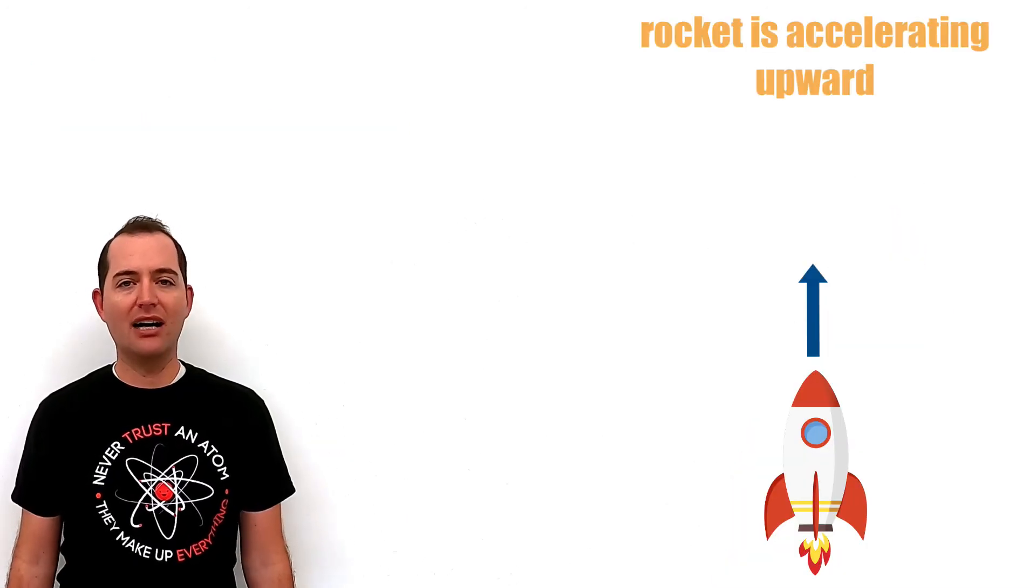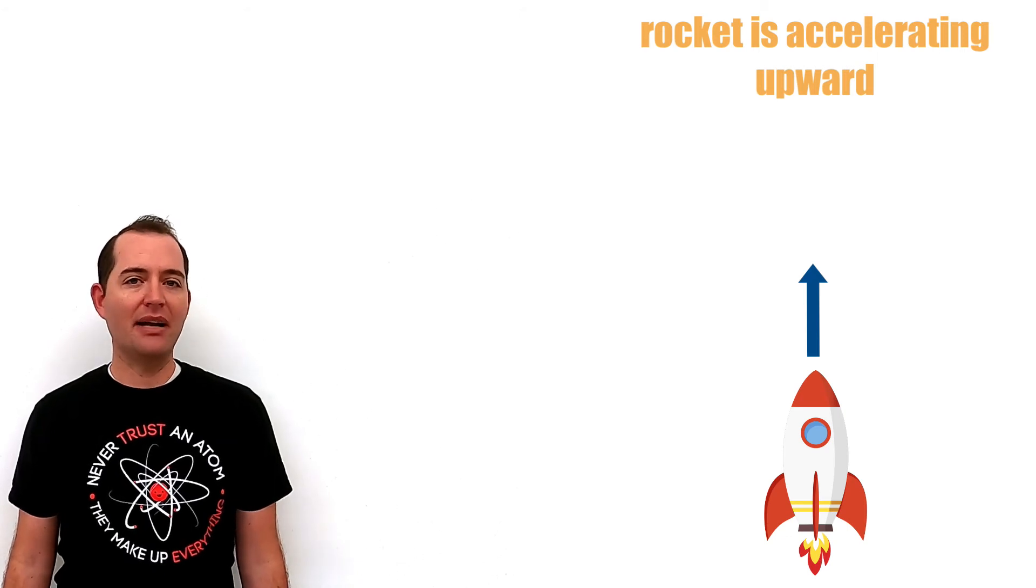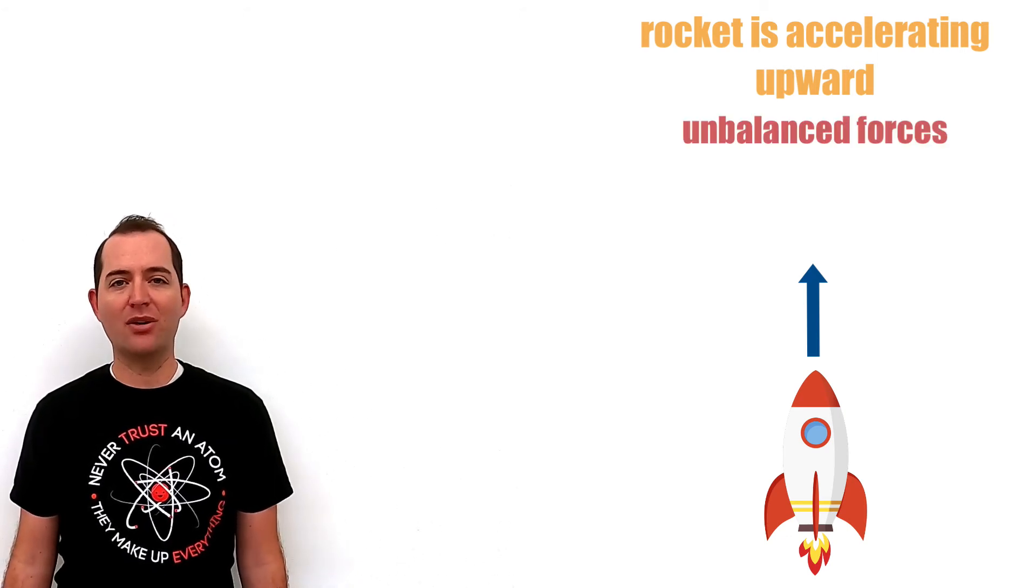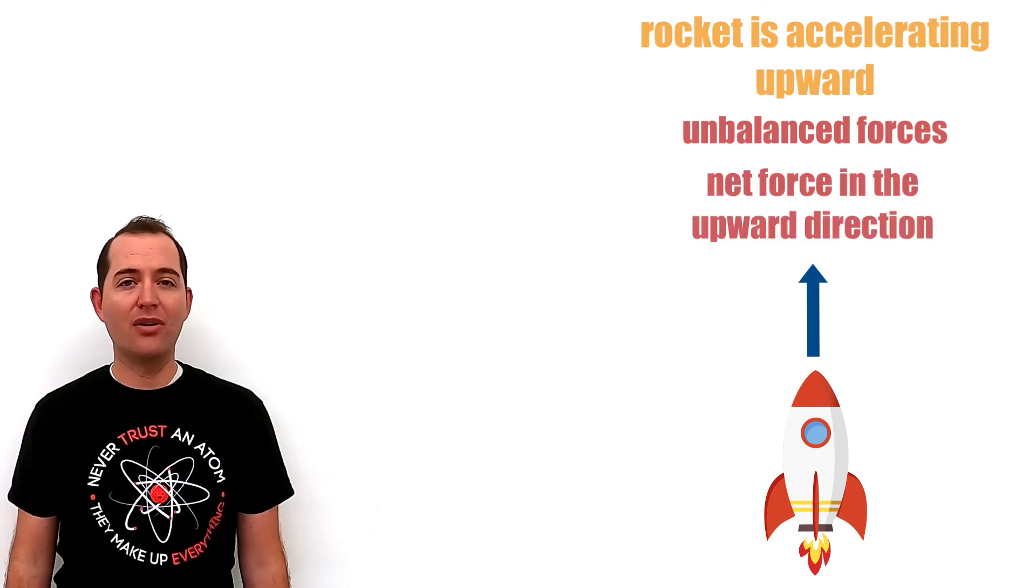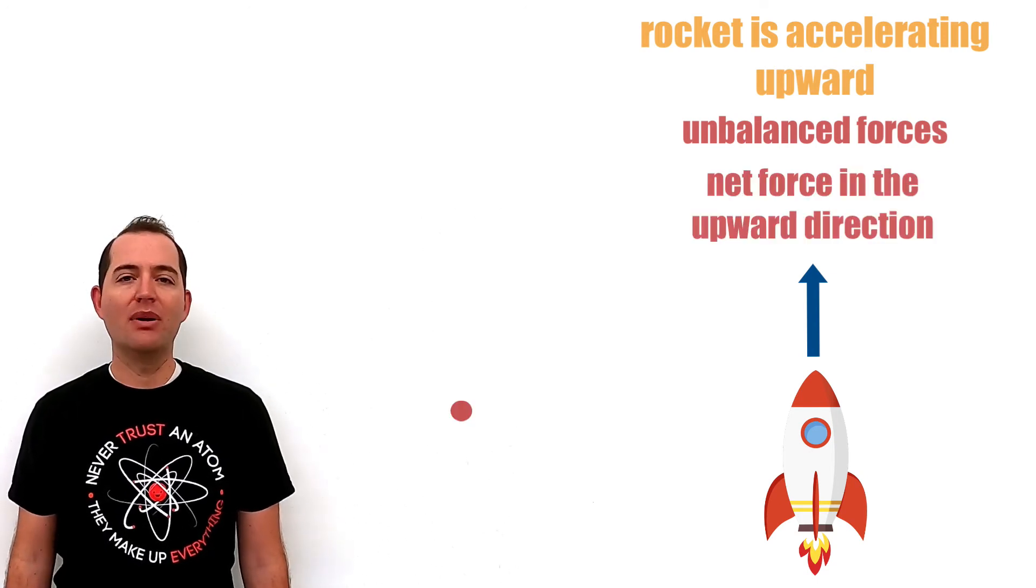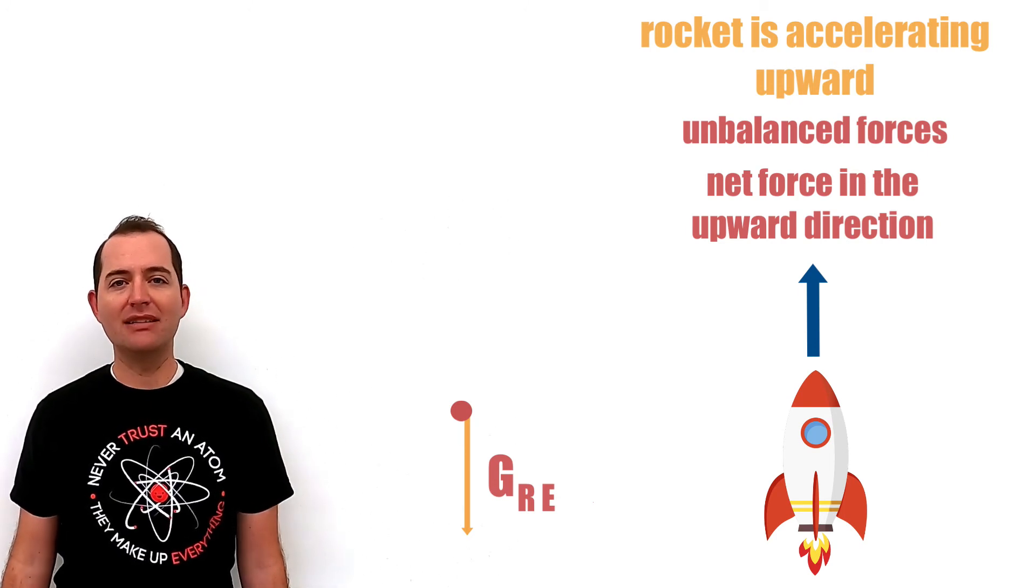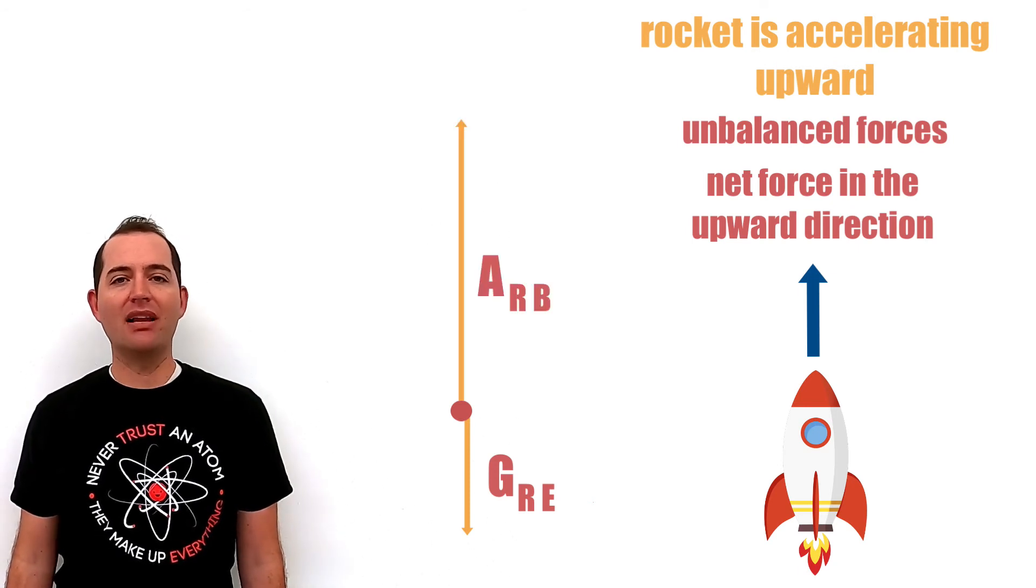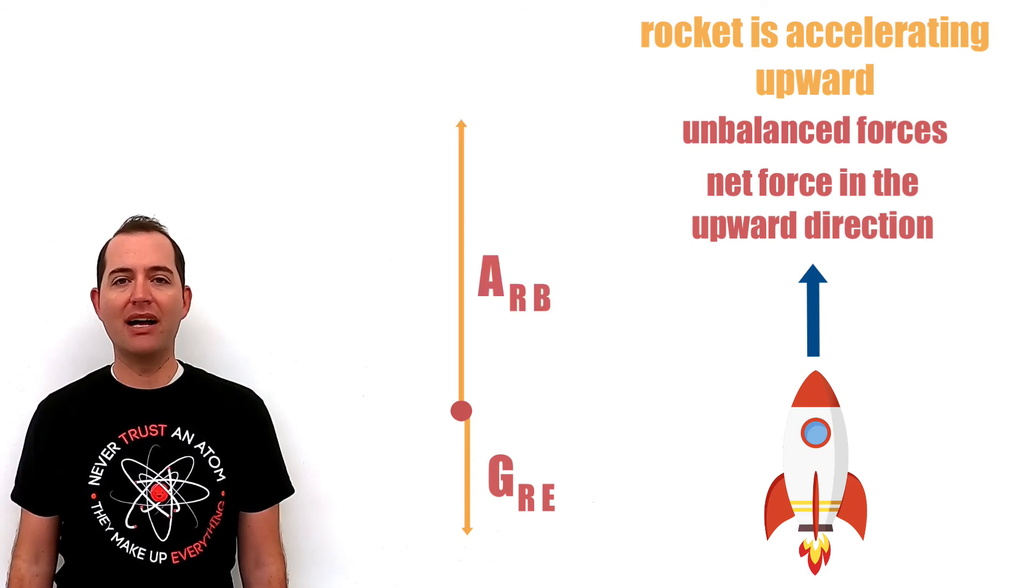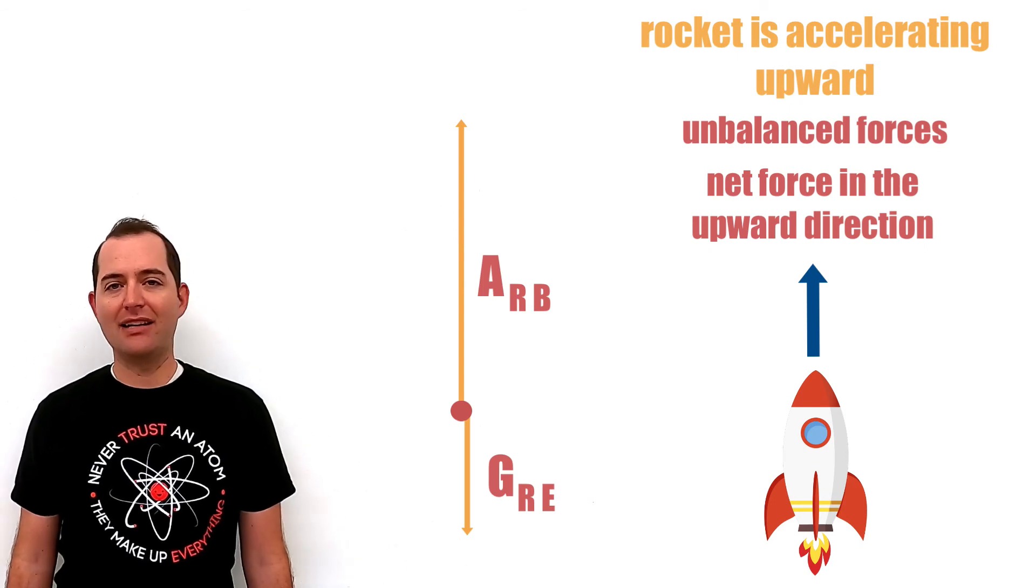we have a rocket that is accelerating upward. Because it is accelerating, we will have unbalanced forces in our free body diagram. Or there will be a net force in the upward direction. We will have a gravitational force acting on the rocket by the earth. This will be downward toward the center of the earth. We will also have an applied force on the rocket by the booster. This force is acting upward.